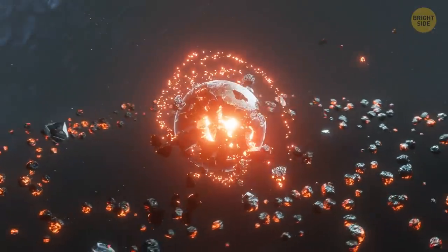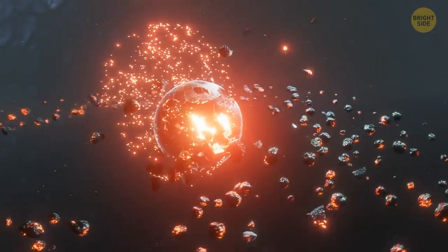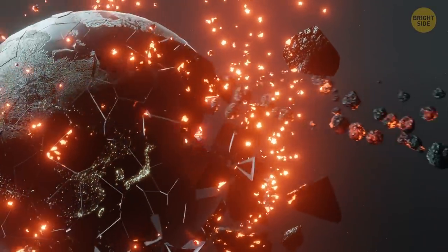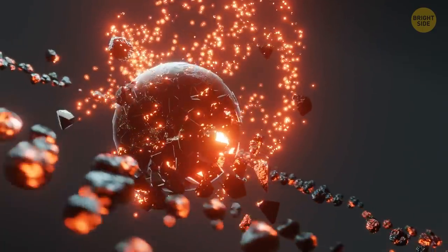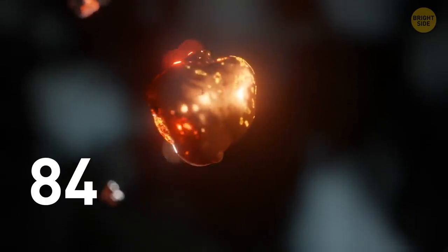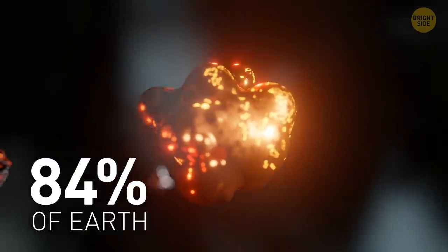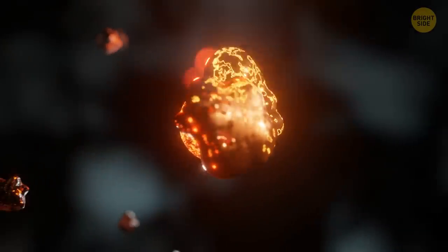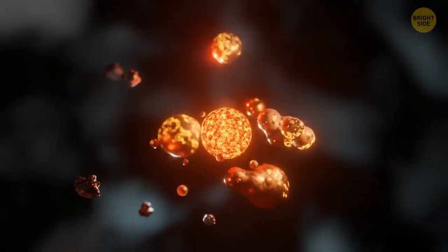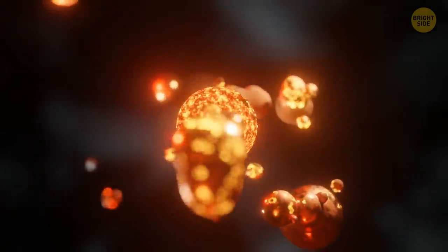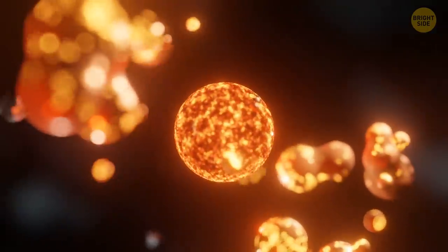The planet bursts apart in a hailstorm of rocks. They're what's left from Earth's thin crust and much thicker mantle. It used to take up nearly 84% of the entire planet's volume. You see the rocky rain change into something way more liquid. It's scorching hot iron and nickel that used to make up Earth's outer core.